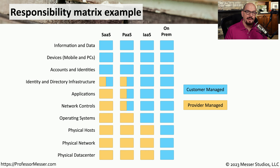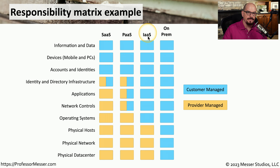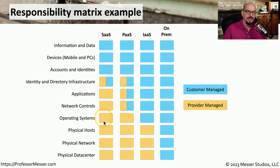This is a responsibility matrix taken from a large cloud provider. You can see that it's broken up by software as a service, platform as a service, infrastructure as a service, and on-premises. Anything in blue is managed by the customer, and anything in yellow is managed by the cloud provider. In some cases, there's an overlap where both the customer and the provider are responsible for everything at that level.